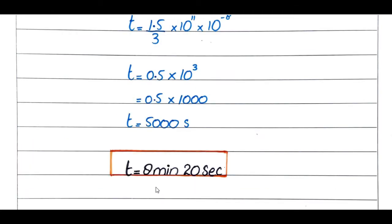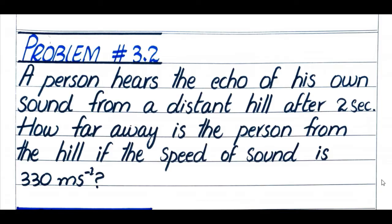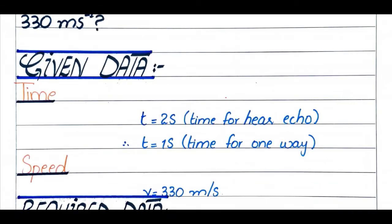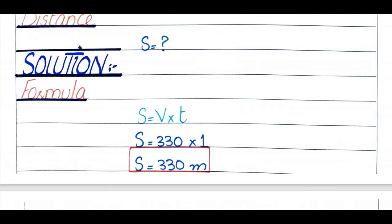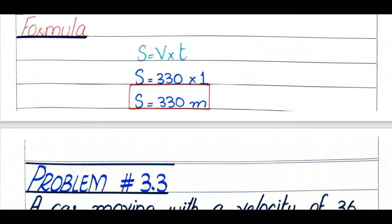Problem number 3.2: A person hears the echo of his own sound from a distant hill after 2 seconds. How far away is the person from the hill if the speed of sound is 330 meter per second? Time for echo is 2 seconds, so one-way time is 1 second. Speed is 330 m/s. Using s = v × t: 330 × 1 = 330 meters.